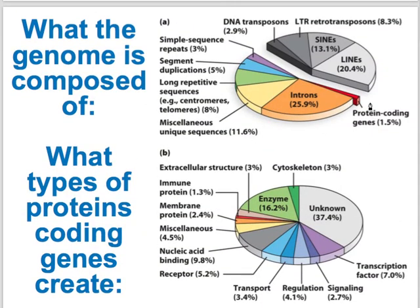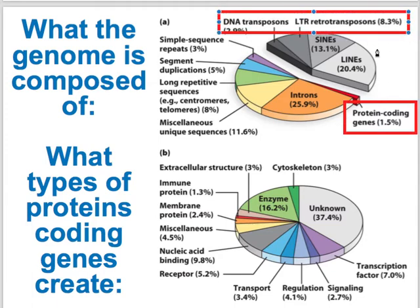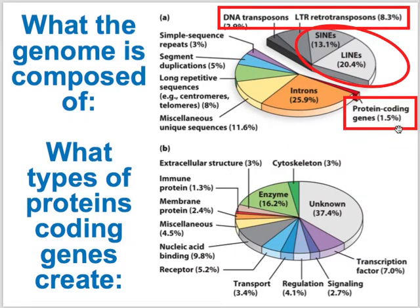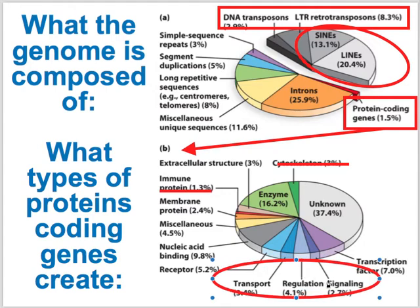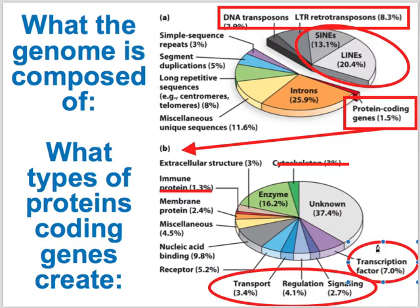Only some regions of the genome are exon-coding genes, and it's a very small proportion. A lot of others are jumping elements — retrotransposons — and then there are structural and miscellaneous sequences. For the protein-coding genes, many are enzymes; some are cytoskeletal, immune, and all kinds of other functions. There are also a lot of transcription factors — about seven percent — which doesn't seem like a lot, but that's a lot of transcription factors. That means there's a ton of combinations of what genes are being turned on and off.